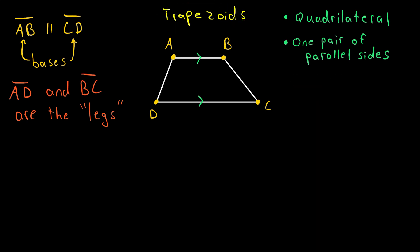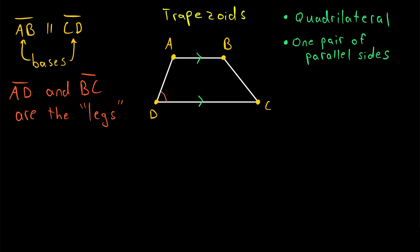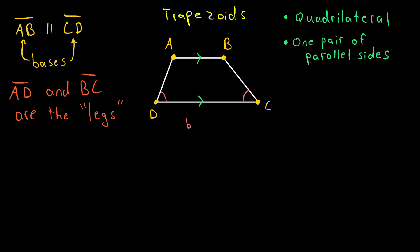Now let's go over a few more basics about trapezoids. Trapezoids have four angles. Two angles that are adjacent to the same base of the trapezoid are called base angles. So angle D and angle C are a pair of base angles of this trapezoid. Similarly, angle A and angle B are base angles of this trapezoid.